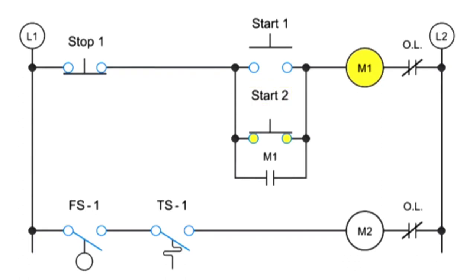With M1 energized, another type of control logic is exhibited, called memory logic. The energized M1 coil will cause the auxiliary contact M1 to automatically close.